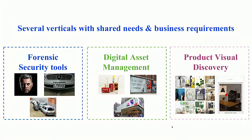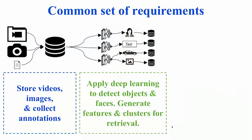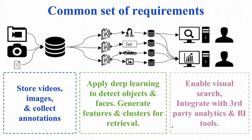Consider these three different verticals: forensic security tools, digital asset management, and product visual discovery. What you will realize is that even though these three fields look different, they have significant shared overlapping needs and business requirements. In each one of them you need to store videos and images, collect annotations, apply some form of deep learning pipeline that might include object detection, face recognition, indexing, and clustering for visual search. And eventually you want to provide this visual search to your customers and integrate these analytics into third-party analytics tools and BI tools so that they can be used by analysts.